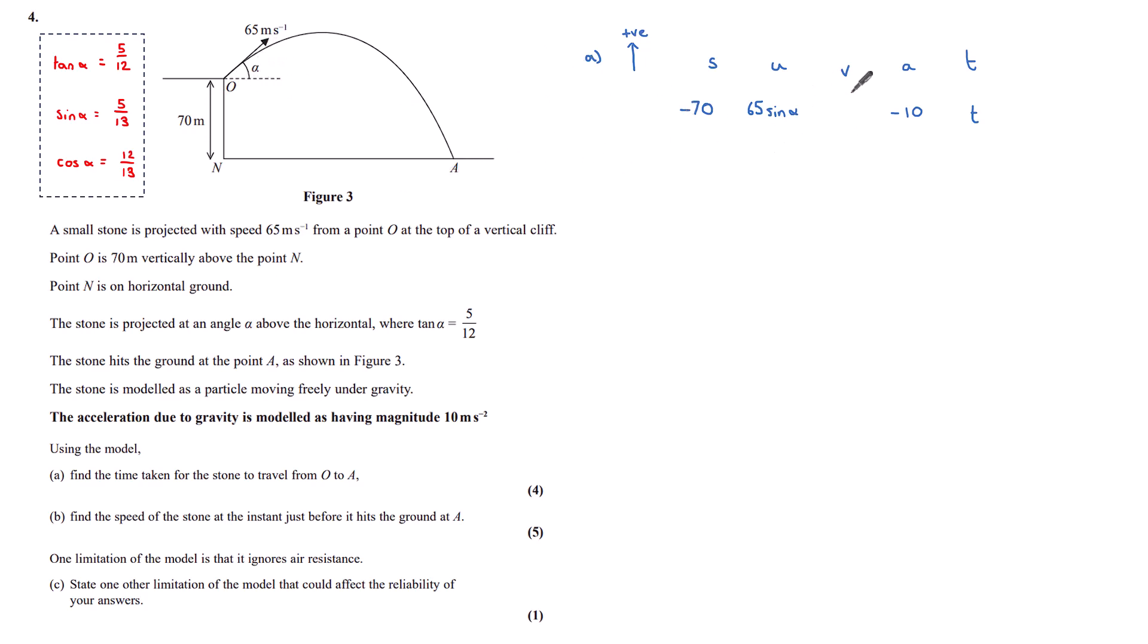I don't know the speed at which it's going to hit the ground. I know acceleration due to gravity is modeled as having a magnitude of 10. And that, again, is acting downwards. And T is the value that I want to find. So I have S, U, A, and T. This is my S equals UT plus half AT squared SUVAT equation, which is in your formula booklet. Substituting my values, that gives me minus 70. U sin alpha is 5 thirteenths. So 65 times 5 thirteenths is 25T. Half of A is minus 5. And then I have T squared.